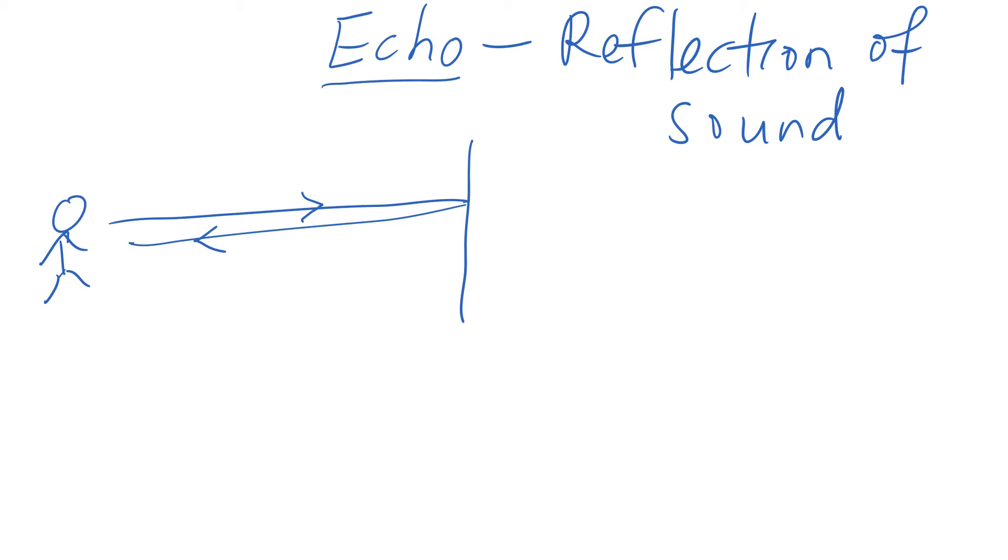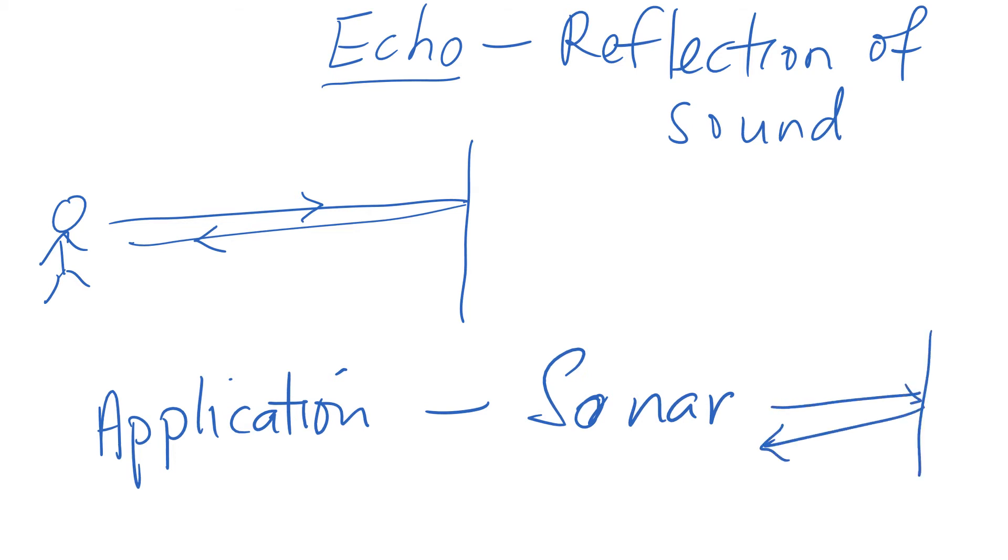So let's look at some of the application for echo. Now, the application for echo is also known as sonar. So sonar basically means that you send a sound wave and when the sound wave is reflected, you make use of this reflection in applications.